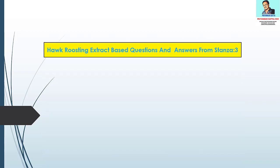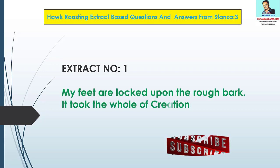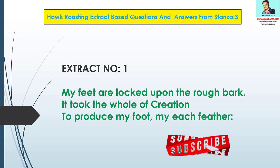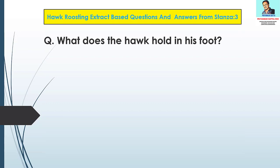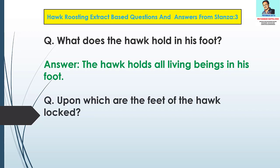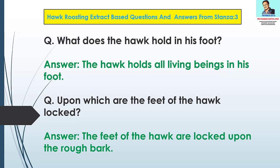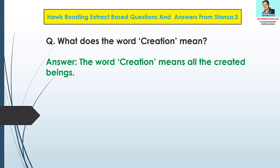Hawk Roosting extract based questions and answers from Stanza 3. Extract number one: 'My feet are locked upon the rough bark. It took the whole of creation to produce my foot, my each feather. Now I hold creation in my foot.' Question 1: What does the hawk hold in his foot? Answer: The hawk holds all living beings in his foot. Question 2: Upon which are the feet of the hawk locked? Answer: The feet of the hawk are locked upon the rough bark. Question 3: What does the word creation mean? Answer: The word creation means all the created beings.